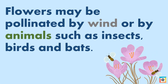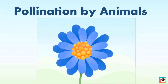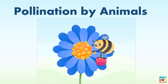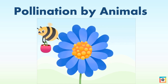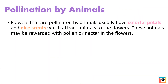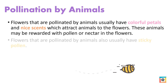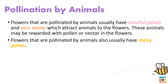Flowers may also be pollinated by wind or by animals such as insects, birds and bats. Flowers that are pollinated by animals usually have colorful petals and nice scents which attract animals to the flowers. These animals may be rewarded with pollen or nectar in the flowers. Flowers that are pollinated by animals also usually have sticky pollen.